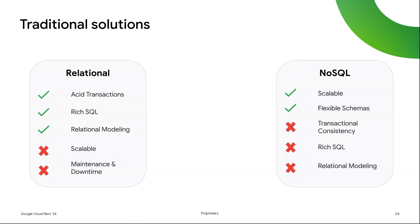However, traditional RDBMSs have their limitations. They can be heavyweight to maintain, and maintenance often comes with downtime, for example on version or schema upgrades. Traditional RDBMSs are also limited by single-box scalability and require complex application-driven sharding schemes. NoSQL databases address some of these limitations, generally by removing much of the functionality and power of RDBMSs.